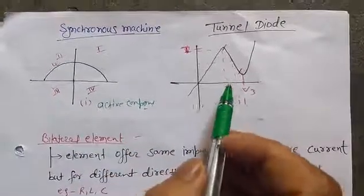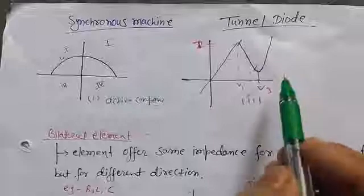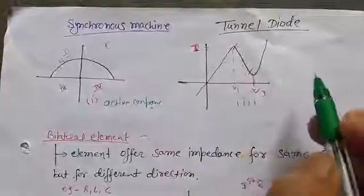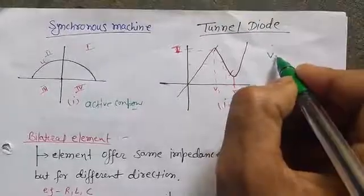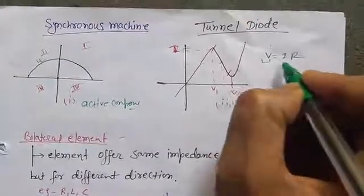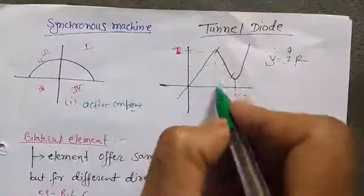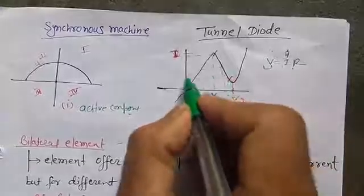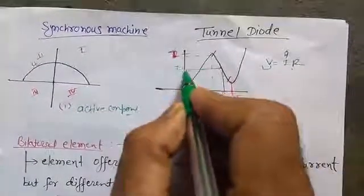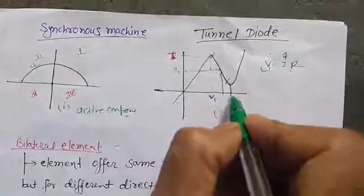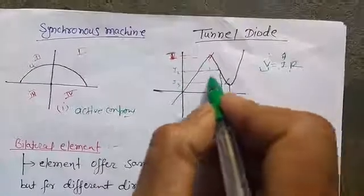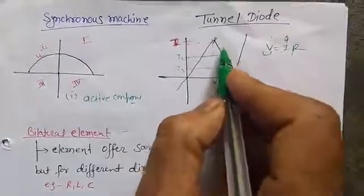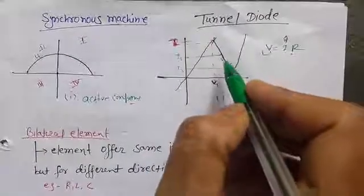In the second graph, if the graph is lying in the first quadrant and the slope is negative, then the component is an active component. As we know from Ohm's law, V equals IR — as we increase the voltage, current should also increase. But in this case, at V1, we have maximum current. As we go to V2, current is decreasing, and at V3, current has decreased further. So from V1 to V3, as we increase the voltage, current is decreasing. It is a decreasing graph, so this is also an active component.